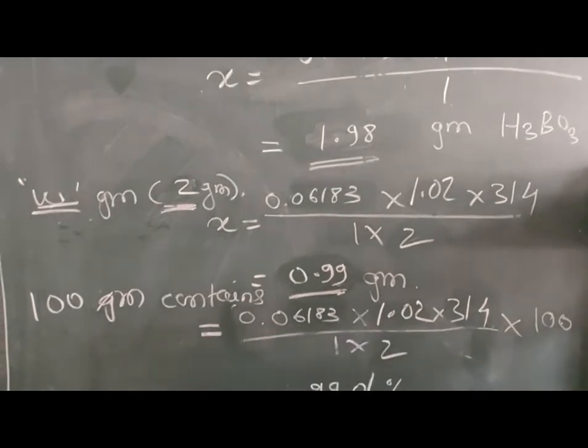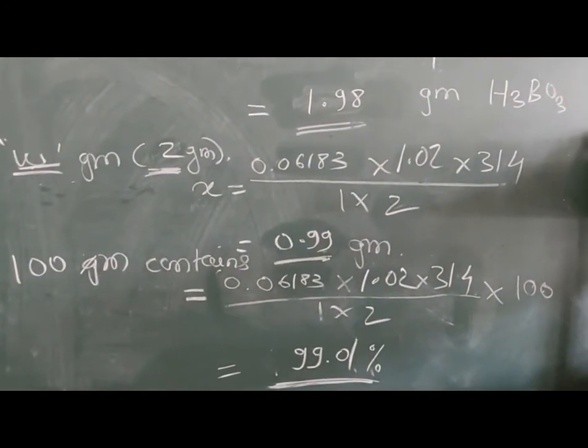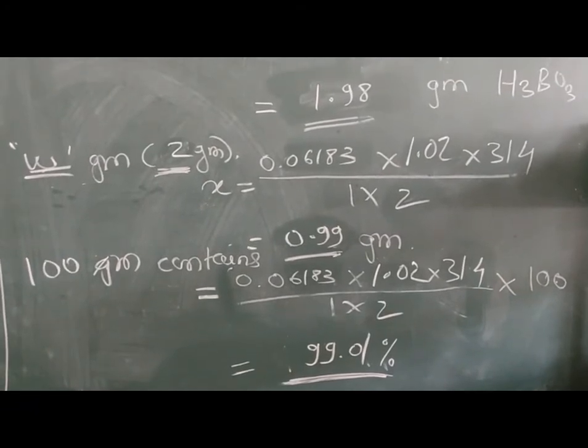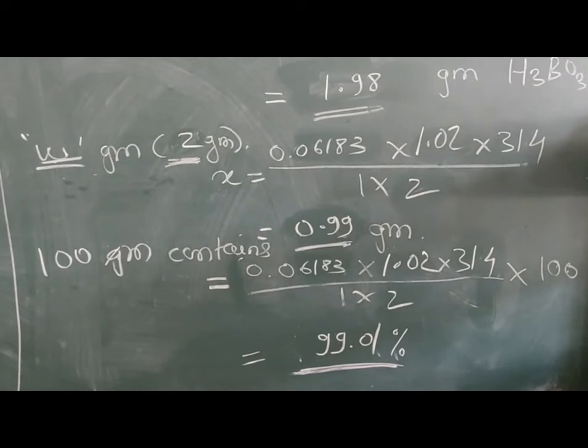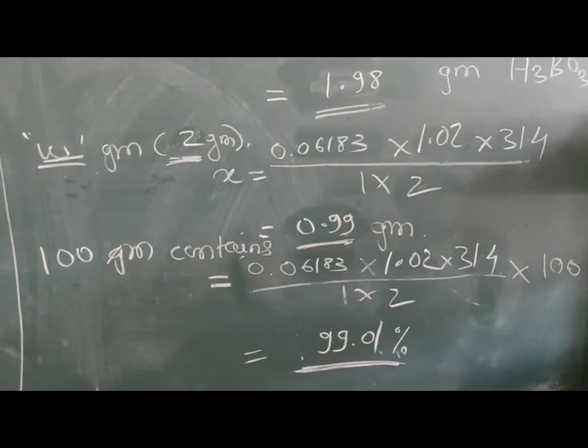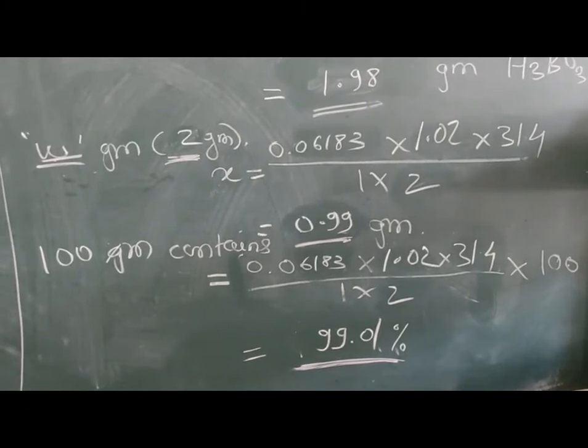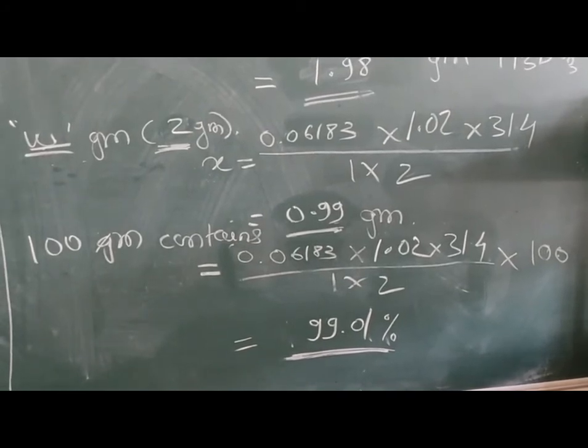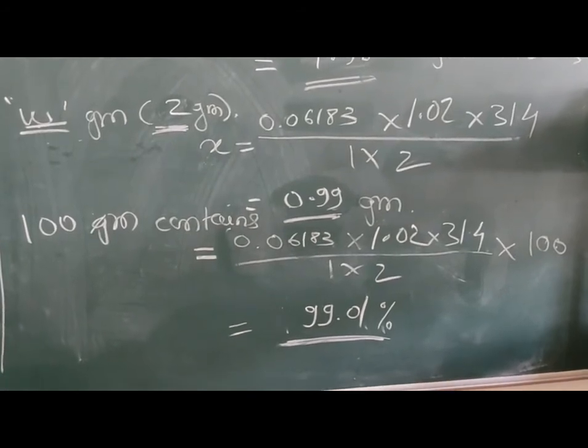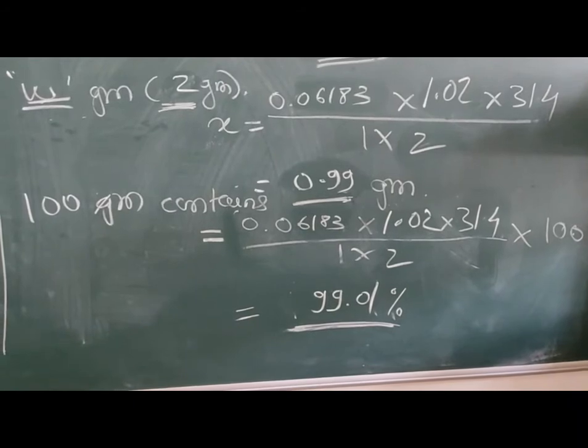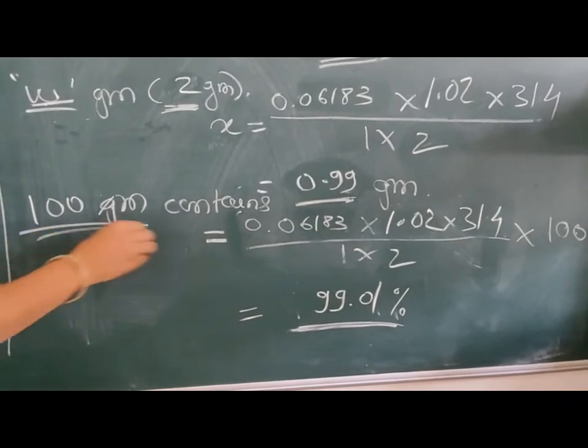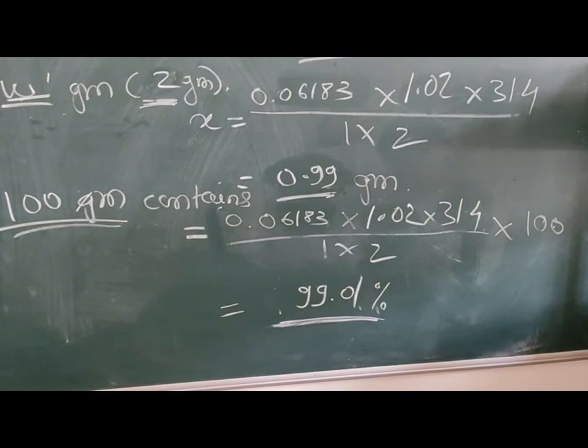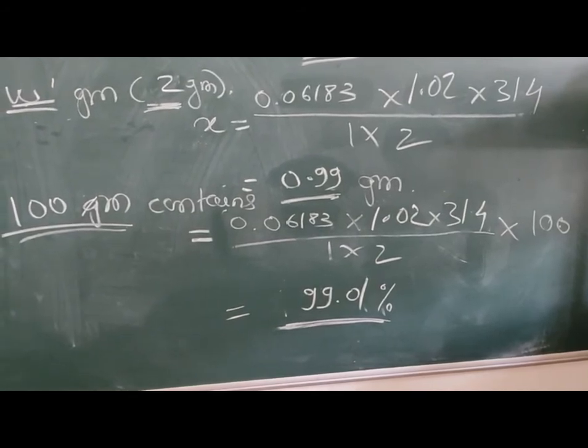Now calculate for 2 grams because we have taken 2 grams of sample. So 2 grams gives 0.06183 times 1.02 times 31.4 divided by 1 times 2. Two is the actual quantity that we weighed for the assay calculation. The answer is 0.99 gram. This is for 2 grams. Now we have to calculate percentage purity. 100 grams contains 0.06183 times 1.02 times 31.4 times 100 divided by 1 times 2. The answer is 99.01%.